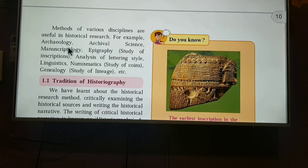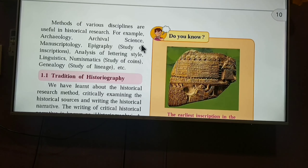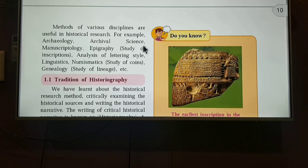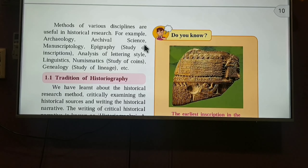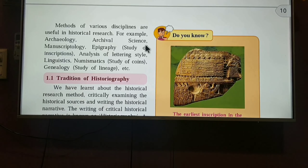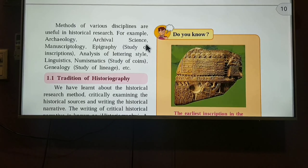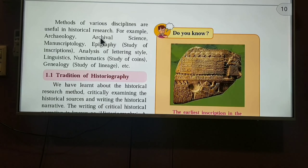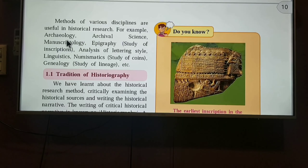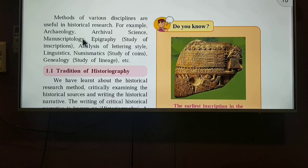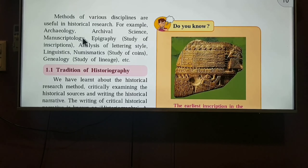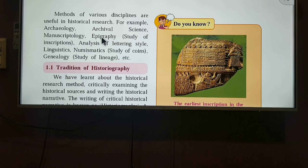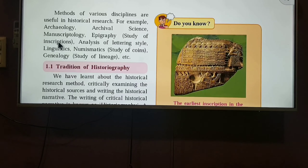Next is linguistics — the study of language. Languages such as Pali, Ardha Maghati, and Sanskrit are deciphered by historians to find out exactly what was written on those documents and coins. The next is numismatics, which is the study of coins. You can also do your graduation — BA and MA — in the subjects of archaeology and numismatics.